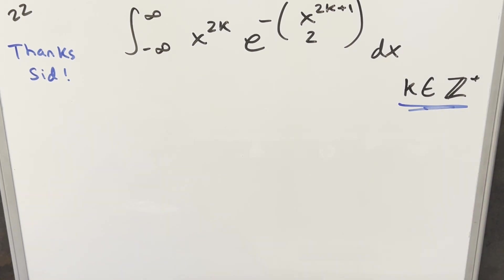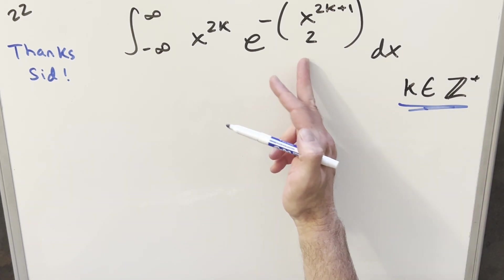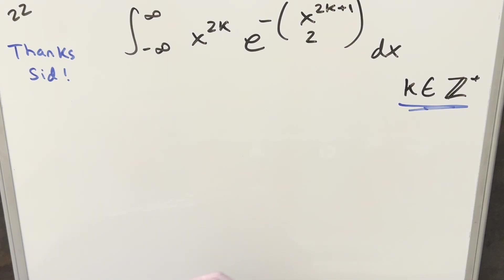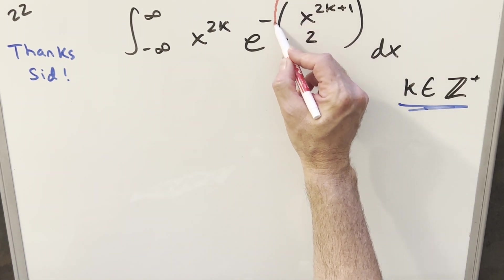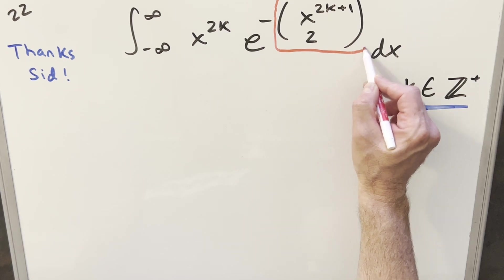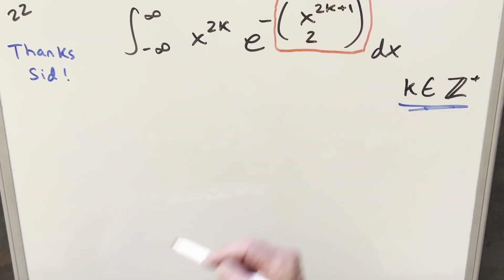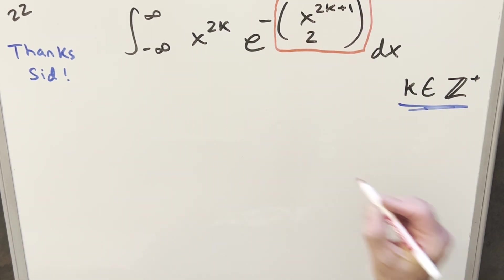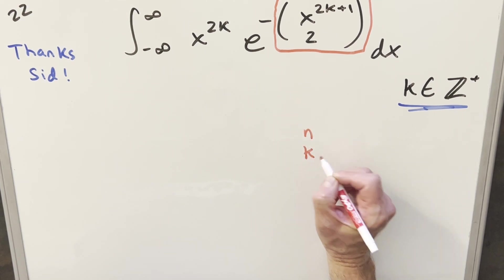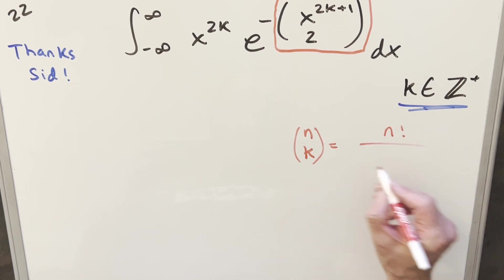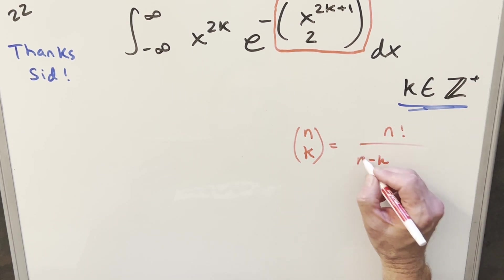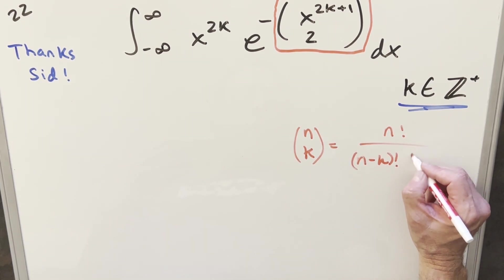I thought this one was really unique — I don't think I've ever done a problem on this channel where I've had the binomial coefficient in the exponent. To get started, the first thing I need to do is figure out what this exponent is. We're going to want the formula for the binomial coefficient, or n choose k, which is n factorial over (n minus k) factorial times k factorial.